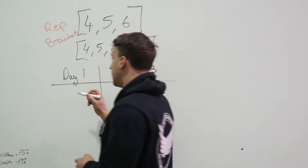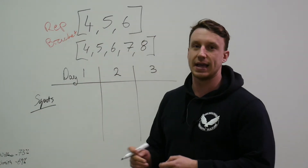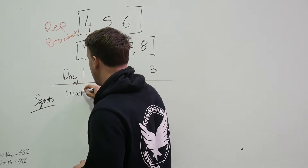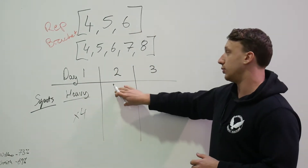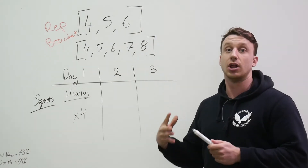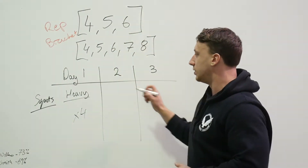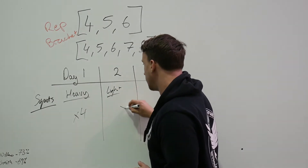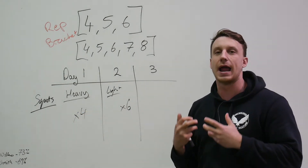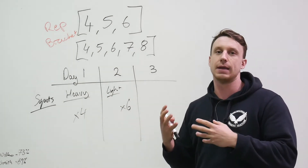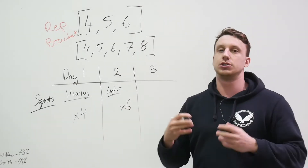For our first example with day one and day two: day one is going to be our heavy day of squatting, which means we choose the lower end of the rep bracket — four reps. Day two is going to be our lighter day, which is our higher-rep or volume day — the higher end of the bracket, which is six reps. You can see that our heavy and light day focus is determined by how many reps we're doing. A higher rep day means a lower weight day and a lower rep day means a higher weight day — so the rep range determines our intensity.